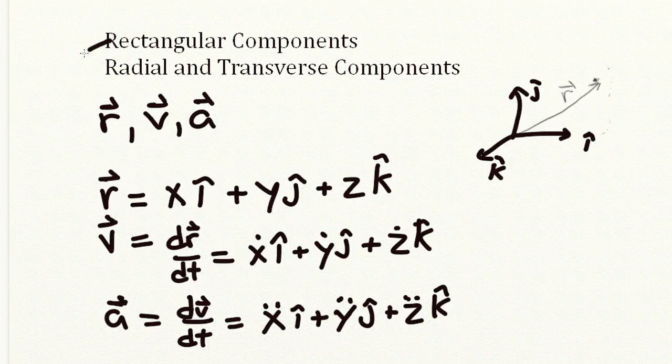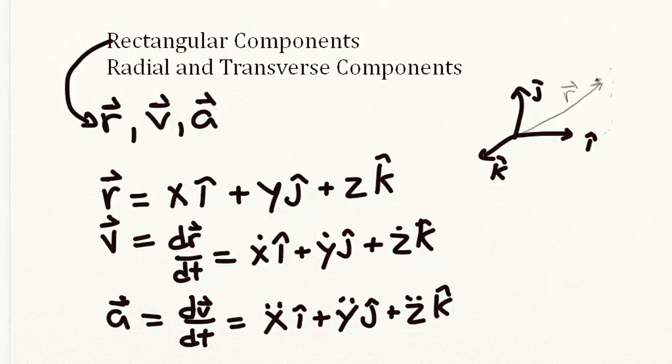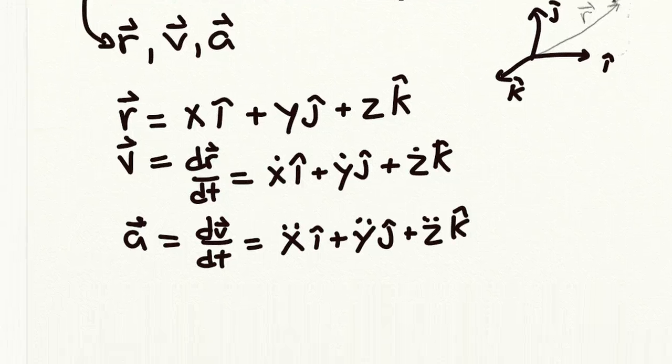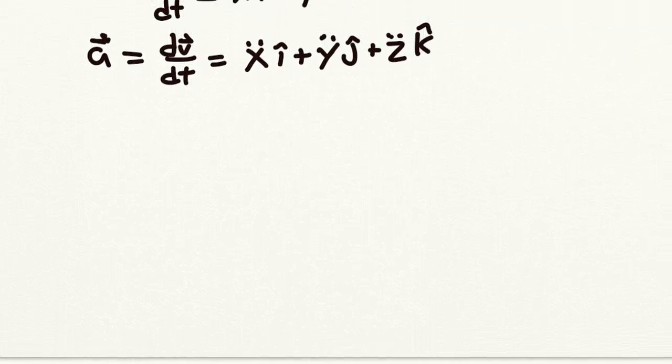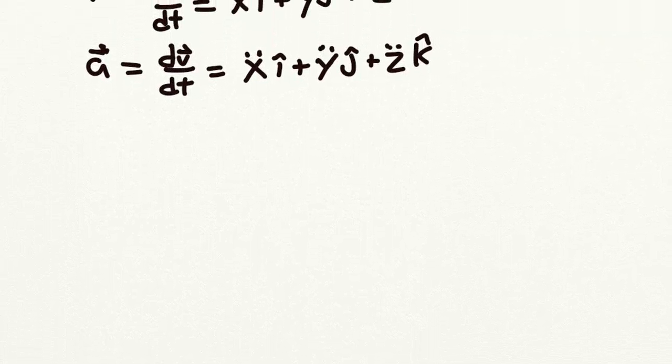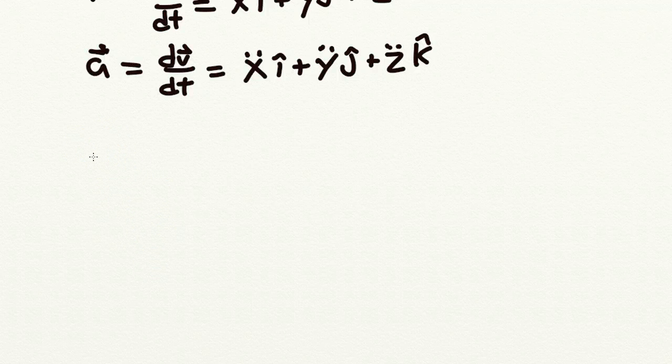So this was all done for these rectangular components. Now let's look next at the radial and transverse components. So we've got the same vector r, and we're going to express it in a different set of coordinates. So I'm going to write it instead this way.